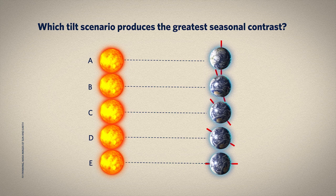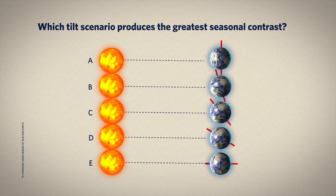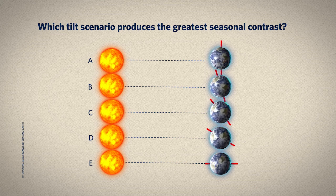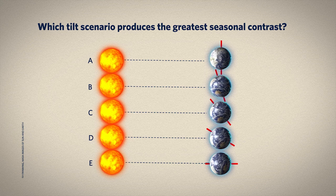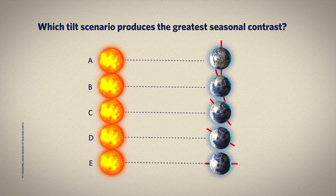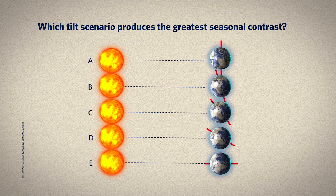You'll need to imagine the Earth traveling around the Sun over the course of a year. If Earth were standing perfectly upright relative to the plane of its orbit, we'd have no seasons — the equator would always get the most solar energy, and the poles would always get the least. Moving on, with a little bit of tilt, we now get some seasonal contrast. Tilt a little more, and we get more seasonal contrast. Those who chose E were correct: the maximum tilt yields the maximum seasonal contrast — really cold winters and really hot summers.